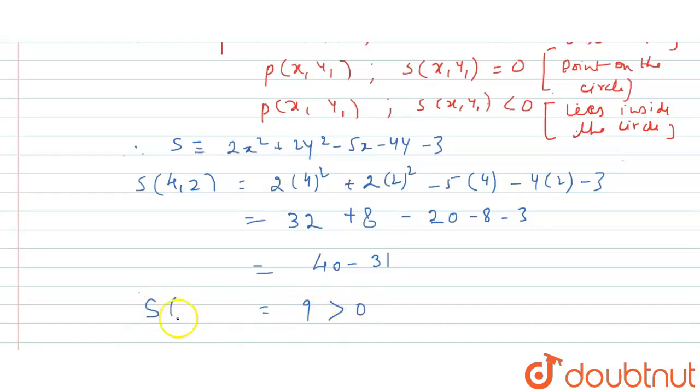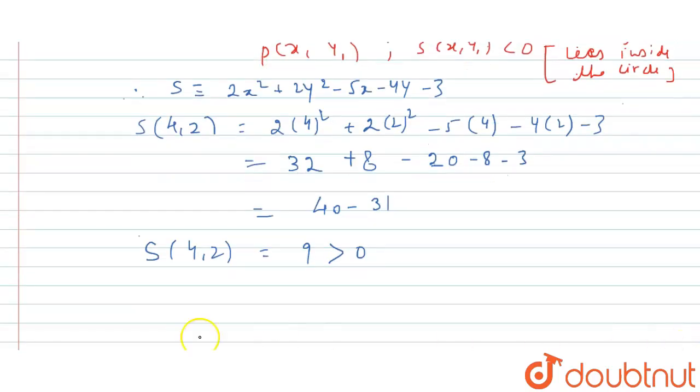When we solve it further, we will get 9 which is greater than 0. And if it is greater than 0, we can say that point P(4,2) lies outside the circle. So this is the answer of the problem.